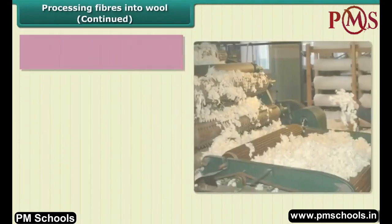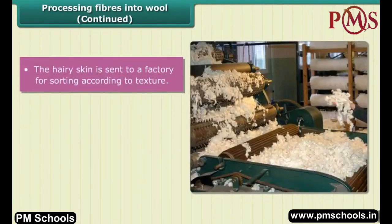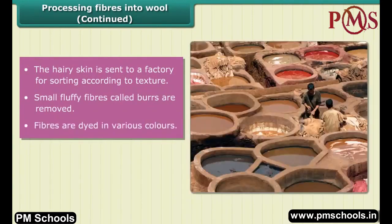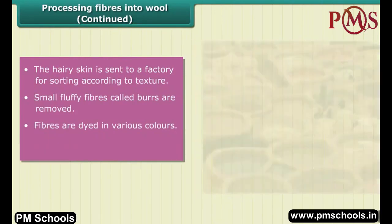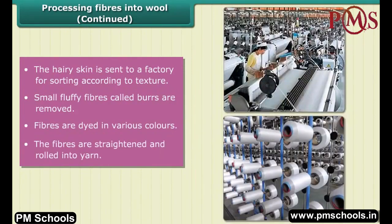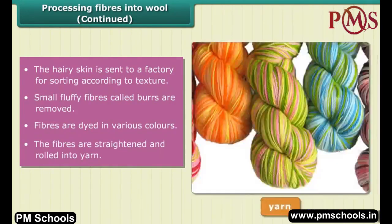The washed hairy skin is sent to a factory where hair of different textures are separated or sorted. Small fluffy fibers called burrs are picked out from the hair. The fibers are dyed in various colors, since the natural fleece of sheep comes in black, brown, or white. Finally, the fibers are straightened and rolled into yarn, and the wool is ready to use.